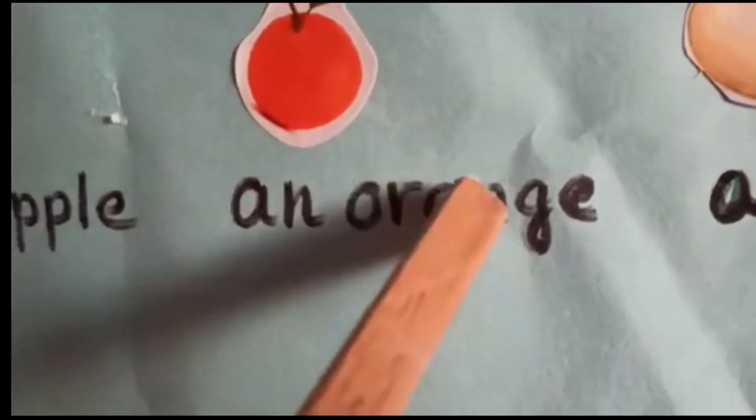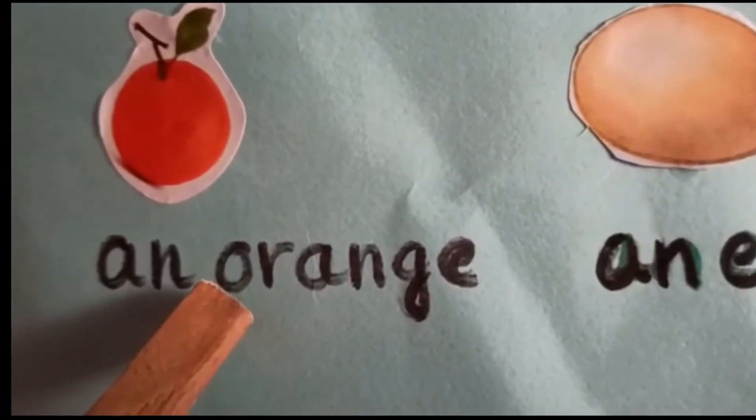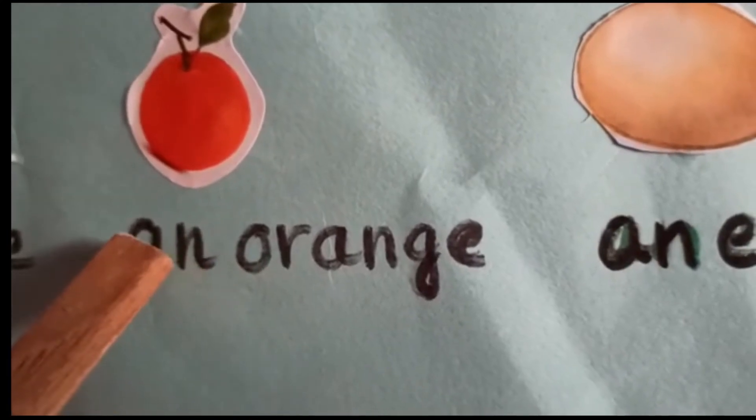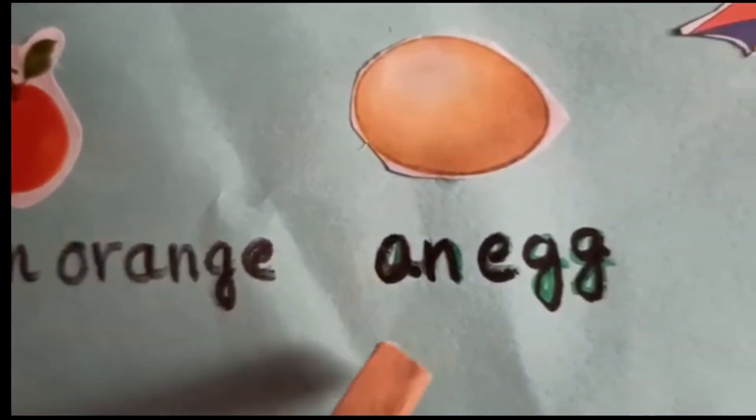An orange. Here first letter O is a vowel. That's why you have to write an before orange. An egg.